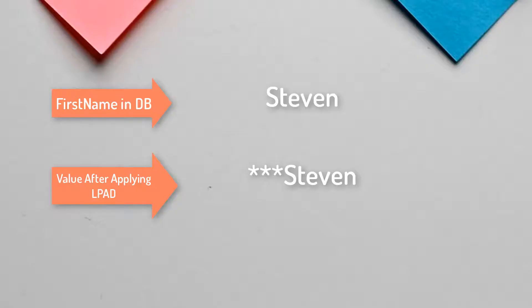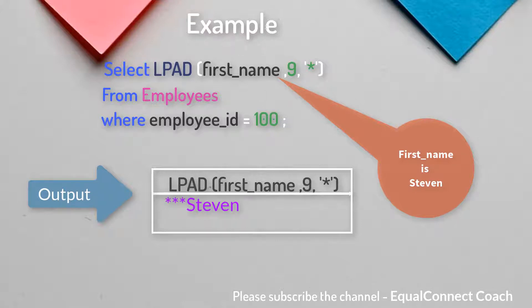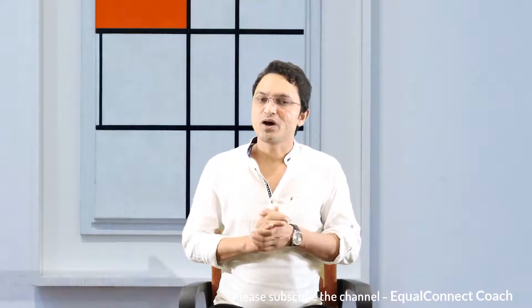The LPAD function is used whenever you want to add some symbol, spaces, or a special character at the left-hand side of a column or string. For example, if you have the name 'Steven' and you want to print it as '**Steven', you would use the LPAD function to achieve that.